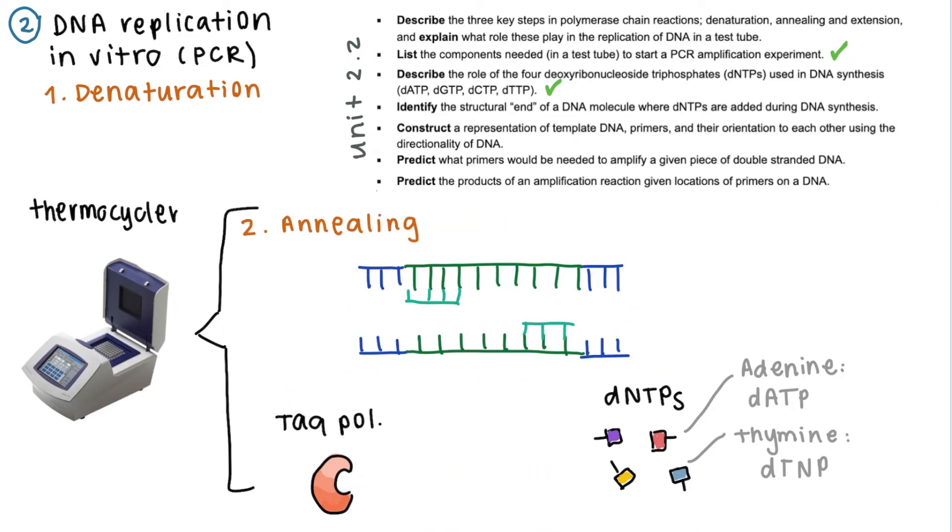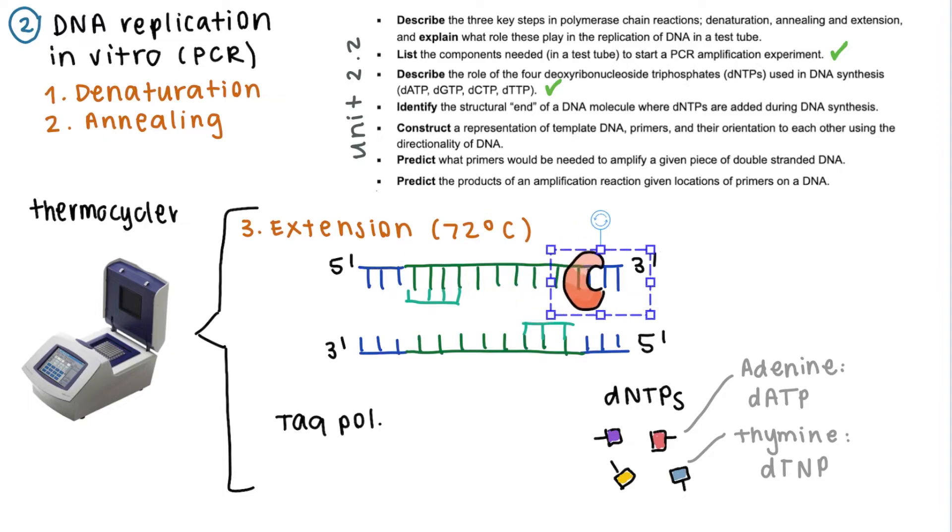Then comes annealing, where the temperature is lowered to allow for DNA primers to bind by themselves. Then the temperature is increased to the optimal temperature in which taq polymerase works, which is around 72 degrees Celsius. And here is where taq polymerase does the job of DNA polymerase by adding the DNTPs the way DNA polymerase does.